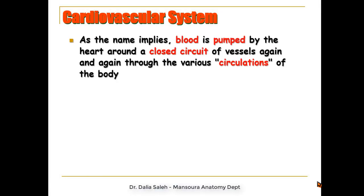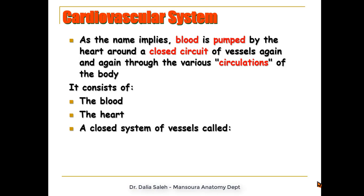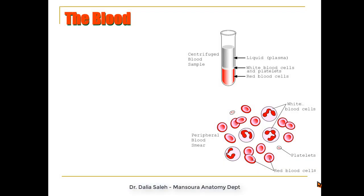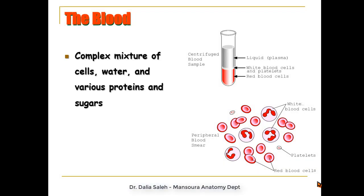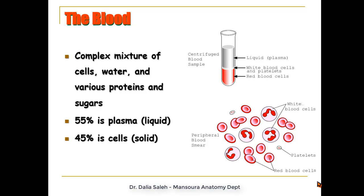As the name of the cardiovascular system implies, blood is pumped by the heart around a closed circuit of vessels through the various circulations of the body. The cardiovascular system consists of blood — the fluid pumped by the heart into a closed system of vessels called arteries, veins, and capillaries. Blood is a complex mixture of cells, water, and various proteins and sugars. About 55% of its composition is liquid plasma, and the remaining 45% is solid, made of cells.